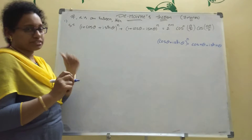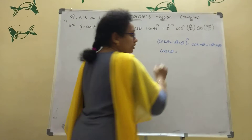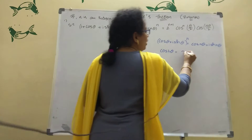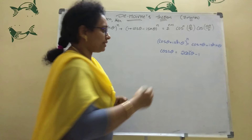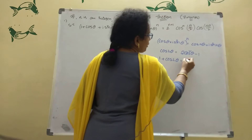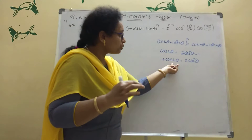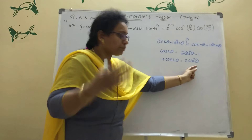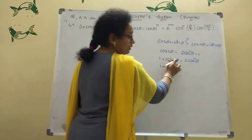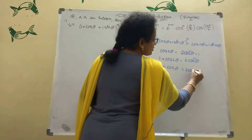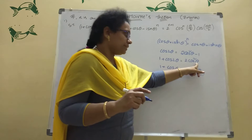The next formula: what is 1 + cosθ? Using the multiple angle formula — cos2θ = 2cos²θ − 1, so 1 + cos2θ = 2cos²θ. Now using the sub-multiple angle (half angle), replacing 2θ with θ: 1 + cosθ = 2cos²(θ/2).